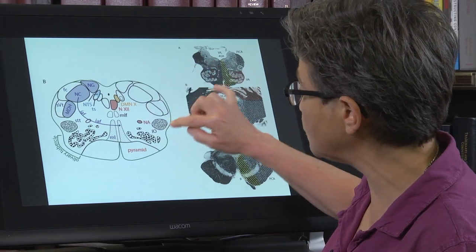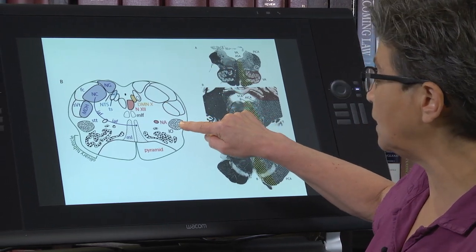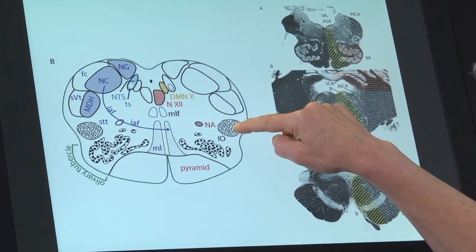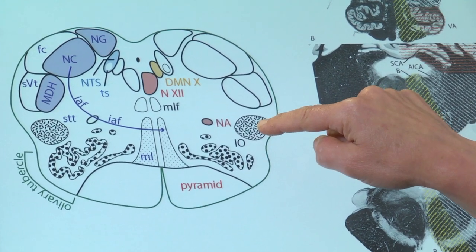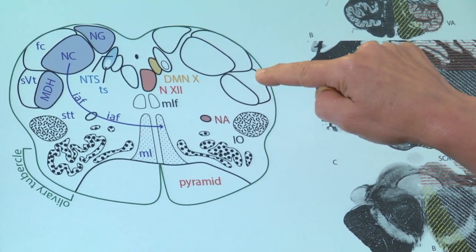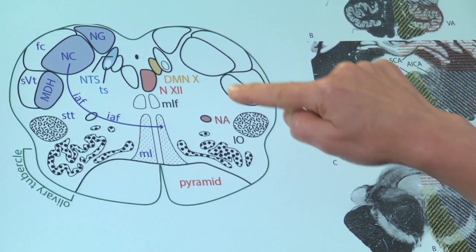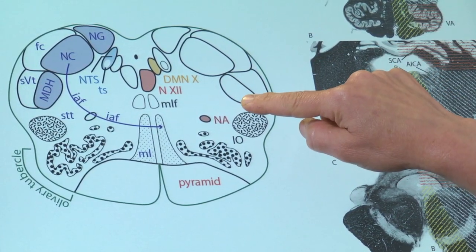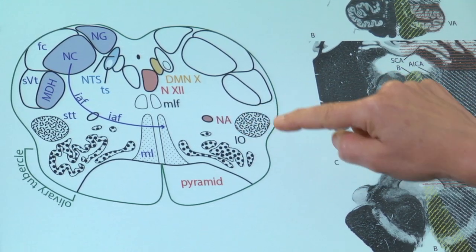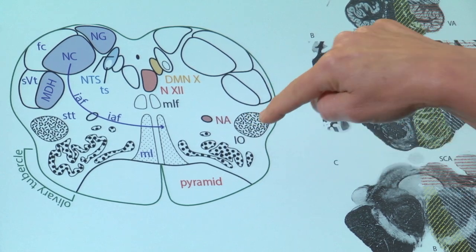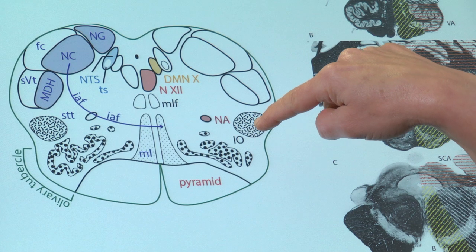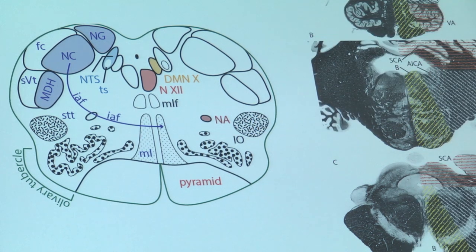First, we're going to lose this area. What travels right here is the spinothalamic tract, so we're going to lose pain and temperature from the contralateral side. We're also going to lose pain and temperature from the ipsilateral face — this is the medullary dorsal horn right here. We're also going to lose the oculosympathetic tract, which is traveling right here, and that is going to give us an ipsilateral Horner syndrome.